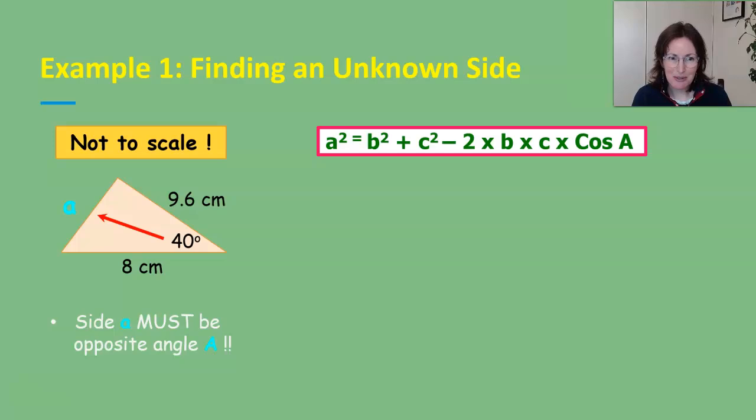So let's do an example. Now here's one, it's not to scale. What have we got? We have two sides and an angle, and it is included because it's between those two sides. The note here is that side a must be opposite angle A, so the side that we're trying to find needs to be opposite the angle where we've been given the information.